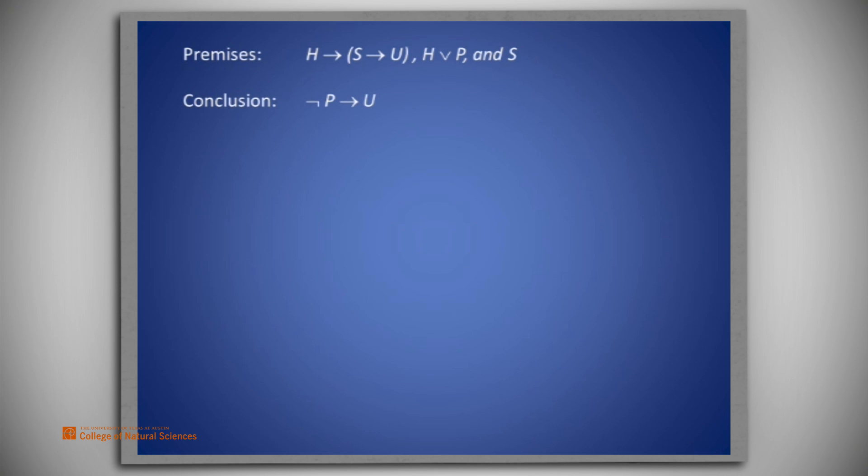The premises of this problem are H implies S implies U, H or P, and S. The conclusion we seek is not P implies U.